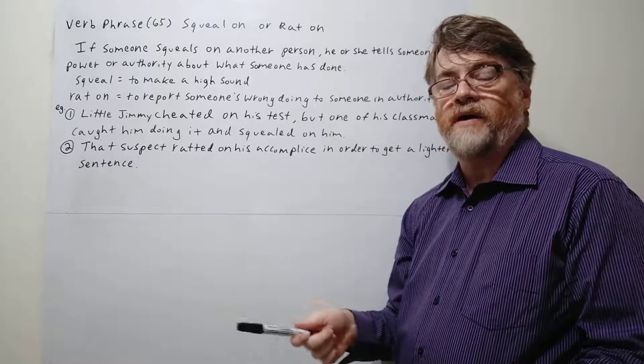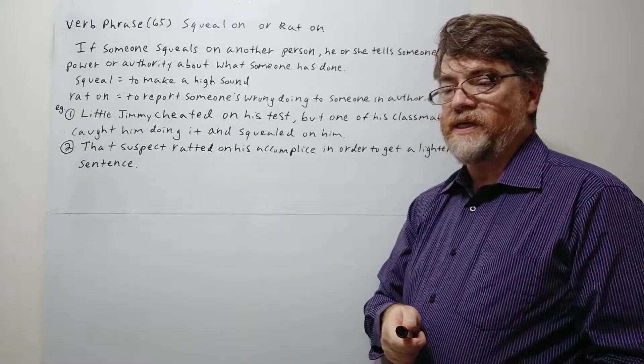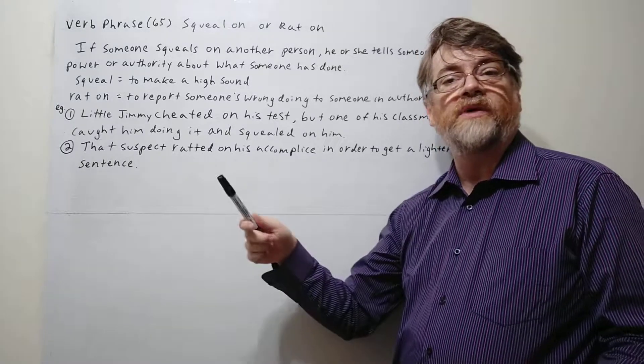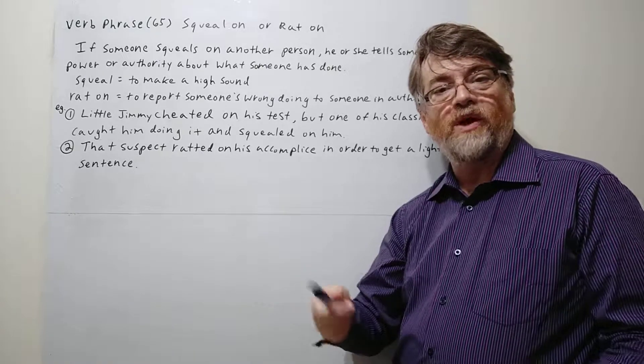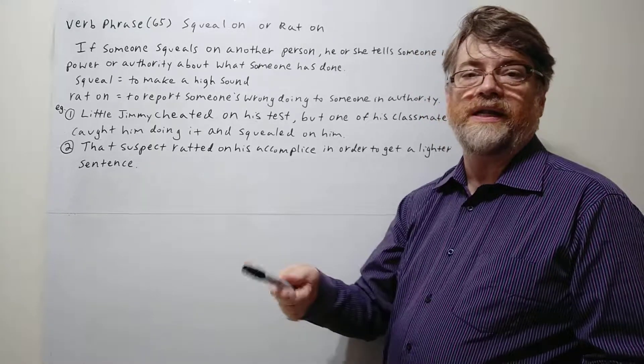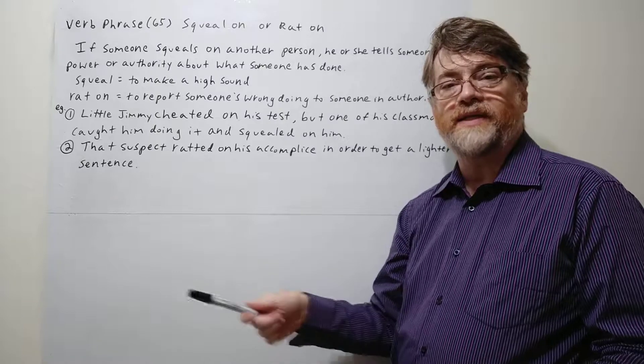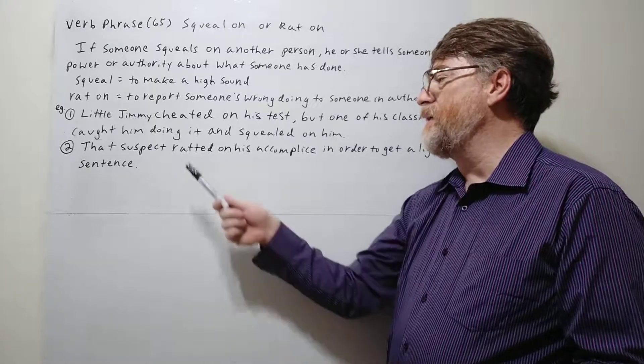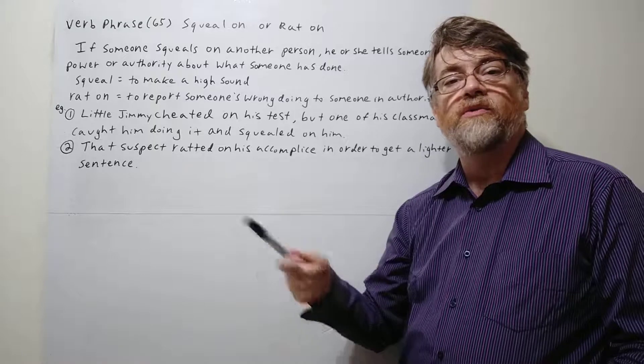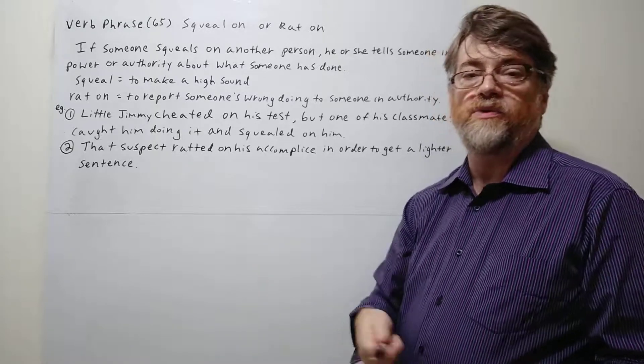Yes, sometimes they may do that, especially if it's a more important person. But the police may say that if you tell us who helped you, maybe we'll go easy on you or you'll get a lighter sentence or reduced sentence. So maybe that's what he did. He ratted on his accomplice. He told the police who helped him do the crime.